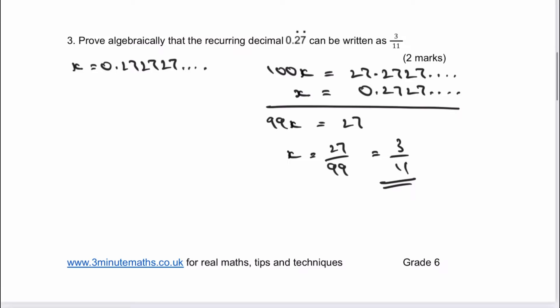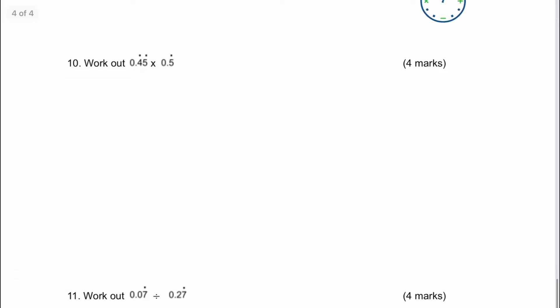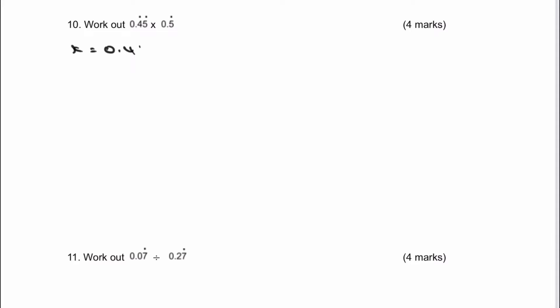I'm just going to scroll through directly to question number 10, which is slightly different. It's one where we've got 0.45 recurring multiplied by 0.5 recurring. So the way that we would deal with that is it's much easier to multiply fractions. So therefore, what I'm going to do is I'm going to start and convert both of these to fractions.